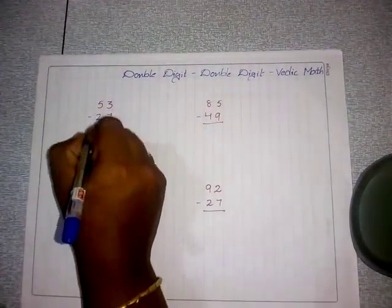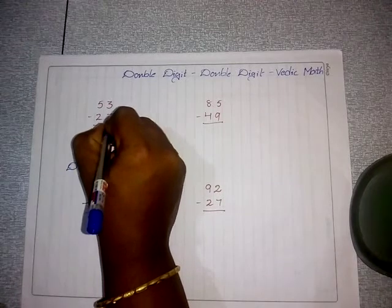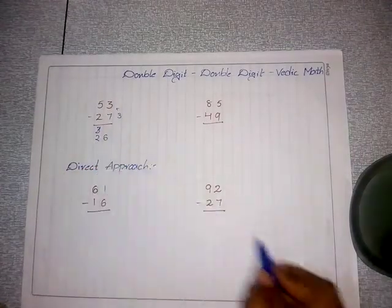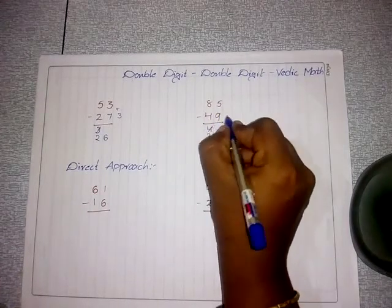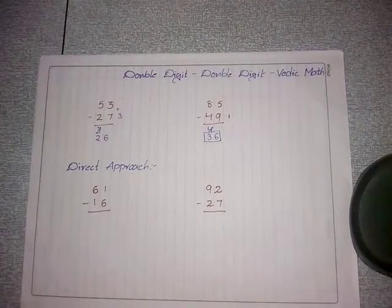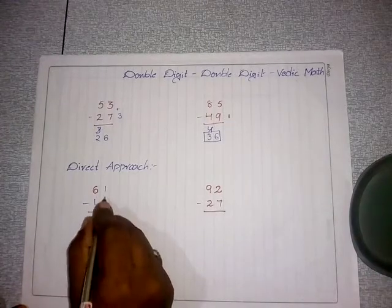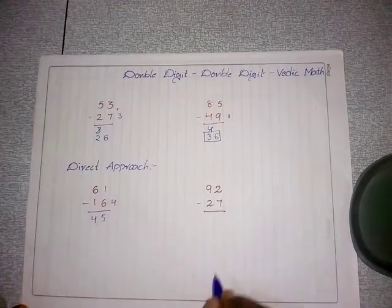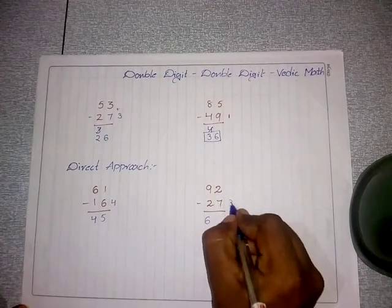Now for double-digit minus double-digit mismatch: write 5 minus 2 equals 3, but write 2 here because the next place is mismatch. The complement of 7 is 3; add 3 to 3 equals 6. The answer is 26. Another: 8 minus 4 equals 4, but write 3 because the next place is mismatch. The complement of 9 is 1; add 1 to 5 equals 6. The answer is 36. Direct approach: write 4 directly because mismatch — complement of 6 is 4, add 4 to 1 equals 5. Next is mismatch — complement of 7 is 3, add 3 to 2 equals 5. The answer is 65.